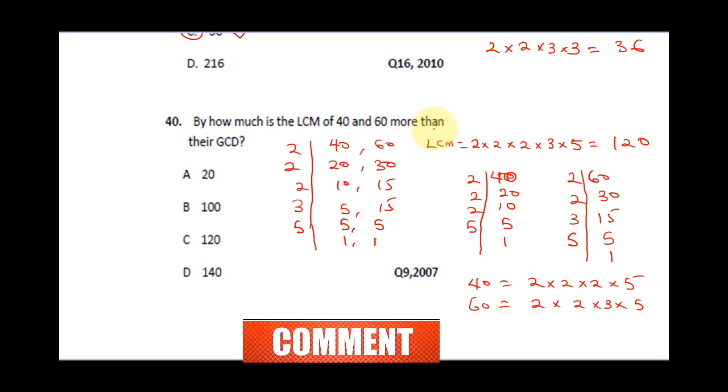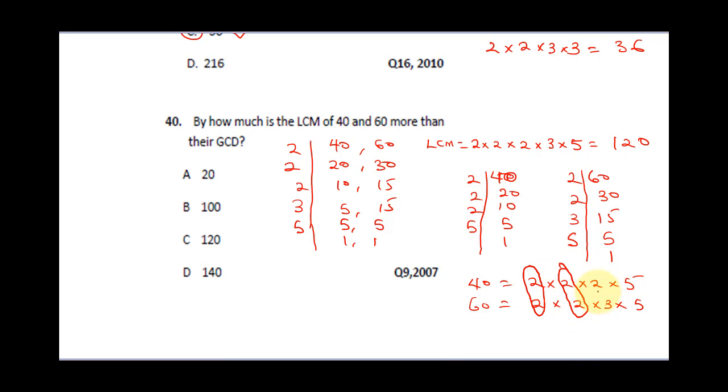The next thing we're going to do is look at the numbers that are common. The common numbers we have are 2, 2 is also common, and 5 is common. Therefore our GCD is going to be 2 times 2 times 5, and that's going to give us 4 times 5, which is 20.